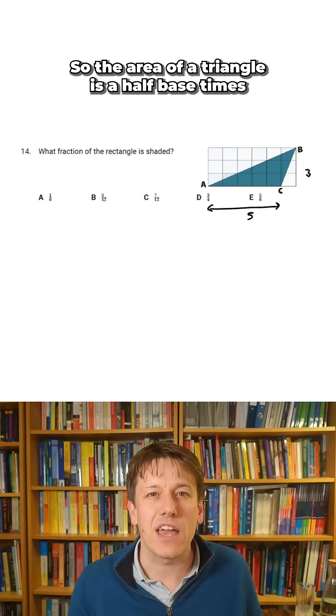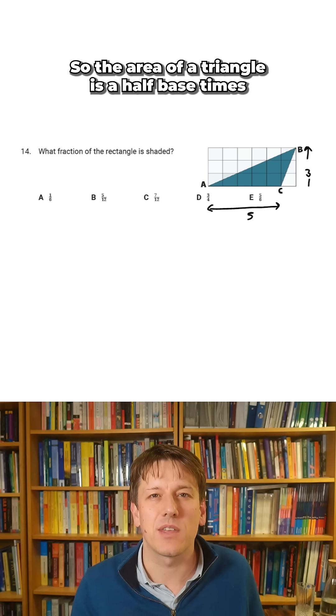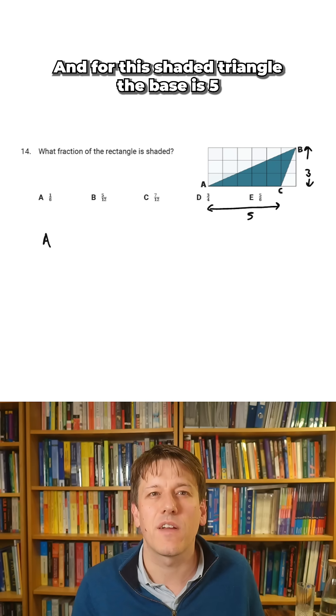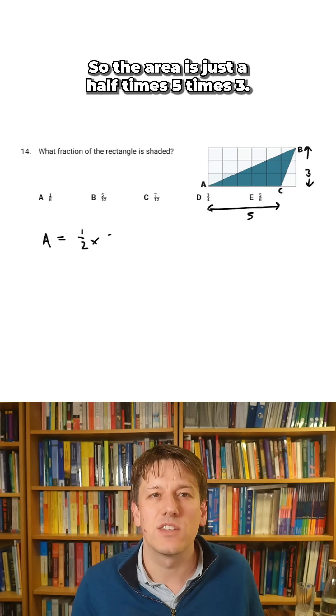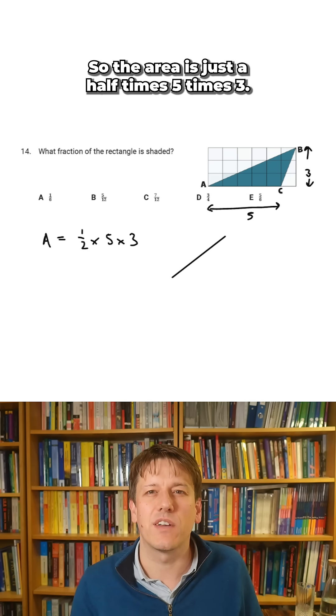So the area of a triangle is a half base times the height. And for this shaded triangle, the base is five and the height is three. So the area is just a half times five times three.